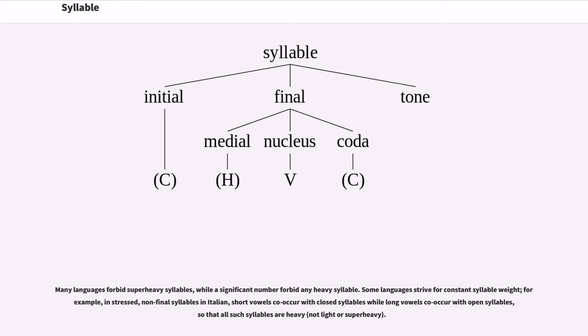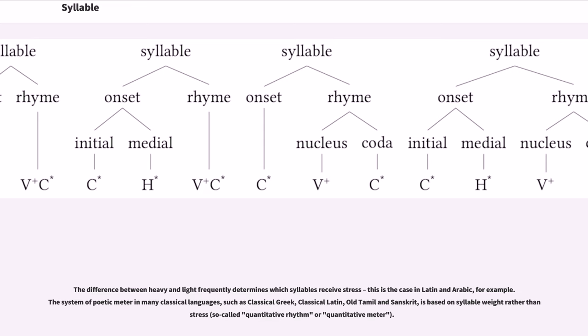Some languages strive for constant syllable weight. For example, in stressed, non-final syllables in Italian, short vowels co-occur with closed syllables while long vowels co-occur with open syllables, so that all such syllables are heavy.